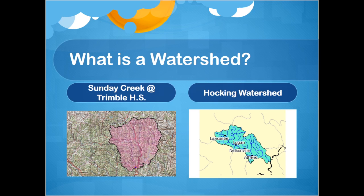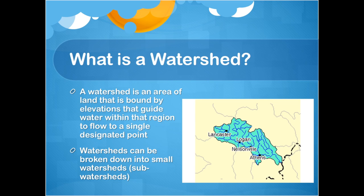Before we go further with the water budget discussion, let's define watersheds, since this is the closed system considered when we calculate a water budget. Here we have two examples: the Sunday Creek watershed at Trimble High School in Gloucester, Ohio, and the Hocking watershed in southeast Ohio. A watershed is defined as an area of land bound by elevations that guide water within that region to flow to a single designated point.